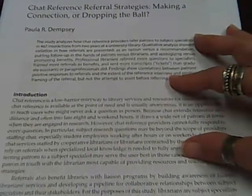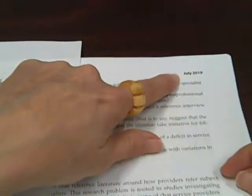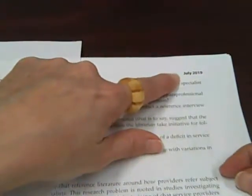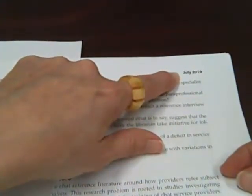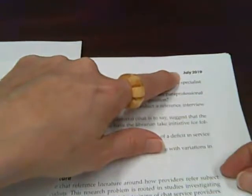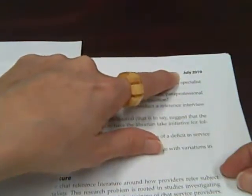When was the article written? The date is listed right up here on the top — July 2019 — so it's recent, which is great because I want the most recent information when we're creating our chat service.